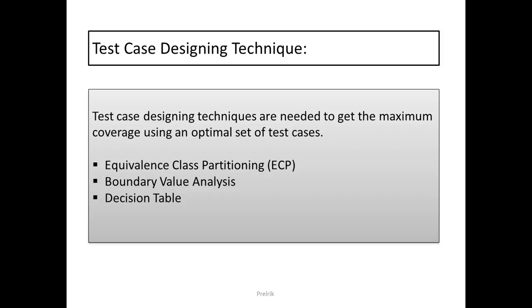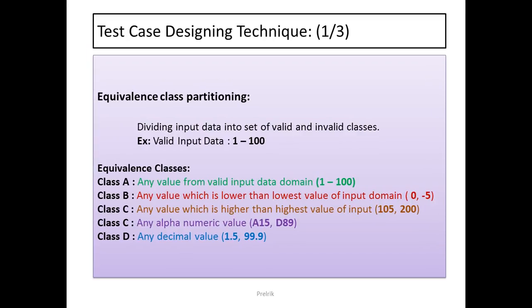In Equivalence Class Partitioning, all the valid input data will be divided into some set of classes, and any value from each class will give you the same result. For example, if the valid input data is 1 to 100, we can define Class A where you pick any data from the valid input domain of 1 to 100, and it is going to give you the same result.